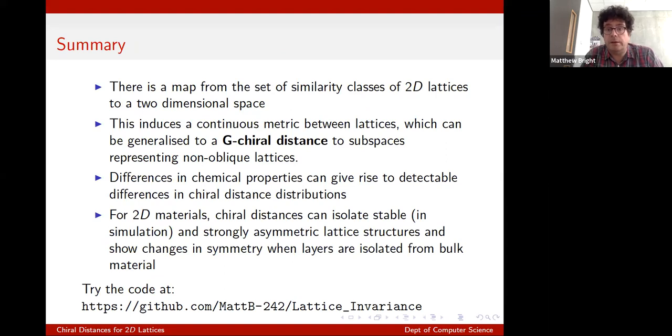So in summary, we can map similarity classes of two-dimensional lattices to a two-dimensional space. This induces a continuous metric between lattices, which we can use to either compare lattices or see how symmetric they are by defining this chiral distance. Differences in chemical properties can indeed give rise to detectable differences in chiral distance distributions. So it's another useful piece of data. And for 2D materials, chiral distances can, as I've said, isolate possible stable asymmetric lattice structures and show changes in symmetry when layers are isolated from bulk material. And again, all of these are computable by my code, which you are welcome to download and try. Thank you very much.